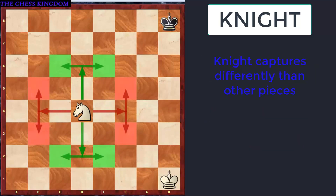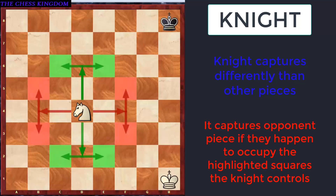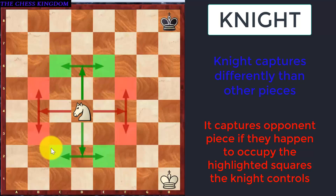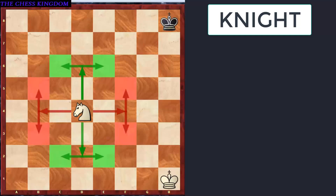The Knight's capture is also a little different than the other pieces. The Knight can capture any opponent piece if it happens to occupy any of the 8 highlighted squares, either green or red. This means the Knight can capture any opponent piece occupying those green or red colored squares. Just to understand its importance over the other pieces, it is assigned 3 points.